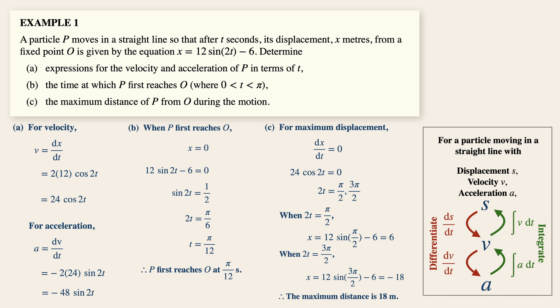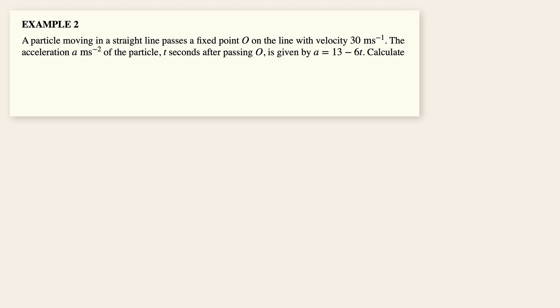Now on to our next practice question, where we will need to find the maximum distance traveled again. So a particle moving in a straight line passes a fixed point O on the line with velocity 30 meters per second. The acceleration given by A meters per second squared of the particle t seconds after passing O is given by this equation over here.